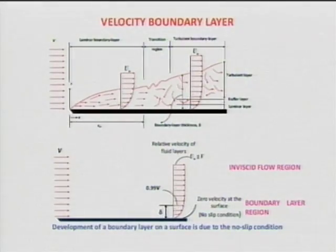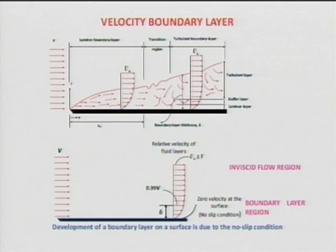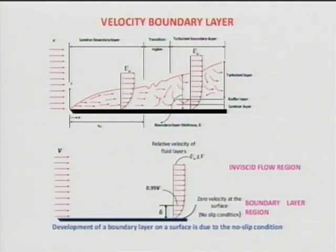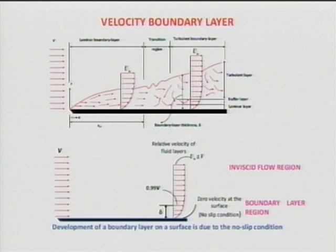Going back to that figure, the rate of growth is different. For laminar, it grows as x to the power of 0.5, and for turbulent it grows as x to the power of 0.8. So the turbulent boundary layer size is larger in the turbulent portion compared to the laminar portion.